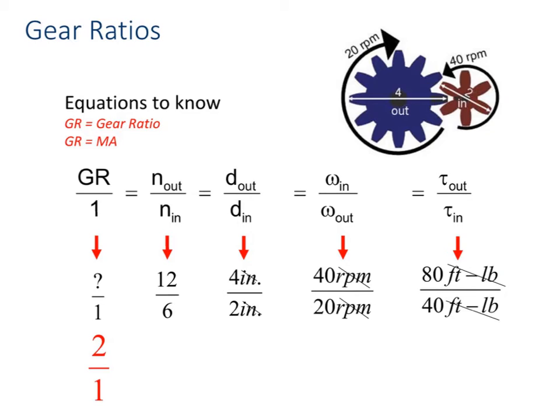So the values are already put in here for you. Number of teeth, 12 over 6. Six into 12 is going to be 2, so the ratio is 2 to 1. Notice all the other numbers are giving you the same thing.